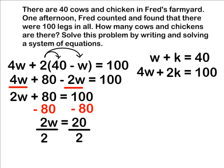When you divide 2 by 2, that leaves us with 1w on the left-hand side. On the other side, 20 divided by 2 is 10. So we now know that w equals 10, or 10 cows.